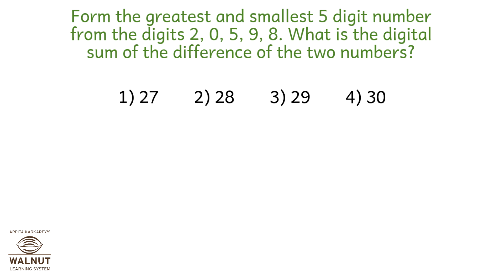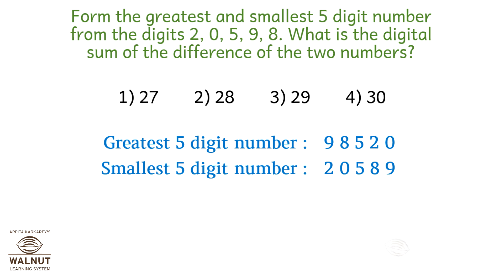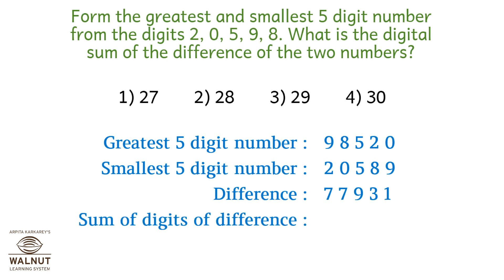Form the greatest and smallest 5-digit numbers from digits 2, 0, 5, 9, 8. What is the digital sum of the difference? Greatest 5-digit number: 9, 8, 5, 2, 0. Smallest 5-digit number: 2, 0, 5, 8, 9 — remember 0 does not go at the lowest place value, it goes in the second lowest. The difference is 77,931. Sum of the digits is 27. So option 1, 27, is right.